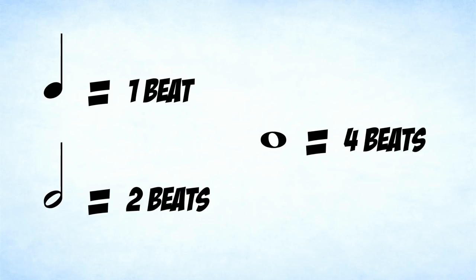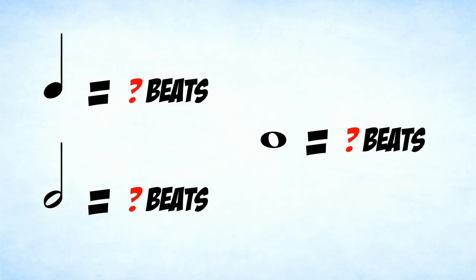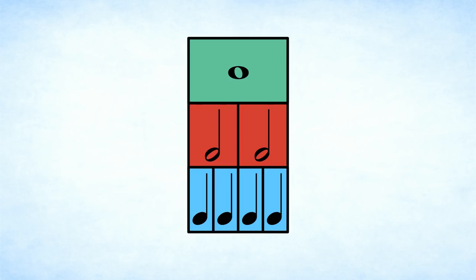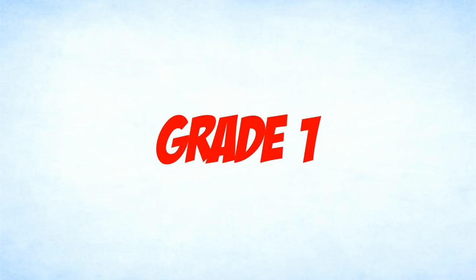So far I've said that a crotchet is one beat, a minim two beats, and so on. Well, that's not always the case and we'll find out more about that in the later grades. However, the relationships always remain the same. A minim is always worth two crotchets and a semibreve is always worth two minims. For grade one, you only need to be able to read music which has crotchet beats.